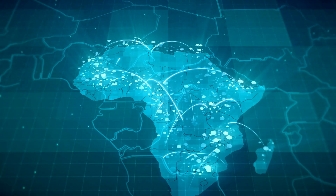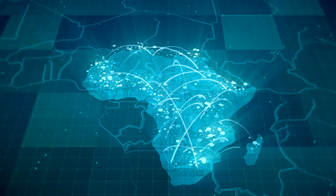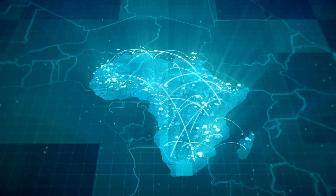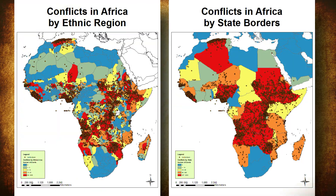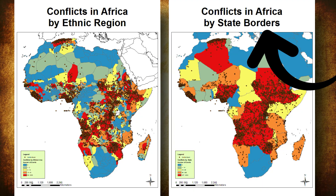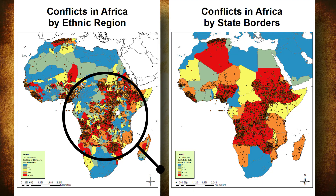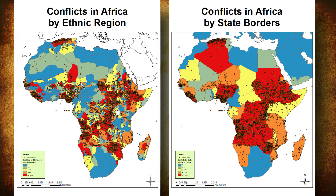Many of the conflicts happening in Africa are between nations and ethnic groups that reside within one state — not between different states. For example, when looking at the Murdoch ethnic map, we can see the different ethnic groups and cultures that reside within each state. When we compare this data with where conflicts are occurring within Africa, we gain a new level of insight. Notice how conflicts are not between two different states, but between the different ethnic groups residing within a state. Comparing the two maps, we can see how conflicts are centered around geographic areas with multiple nations and ethnic groups.